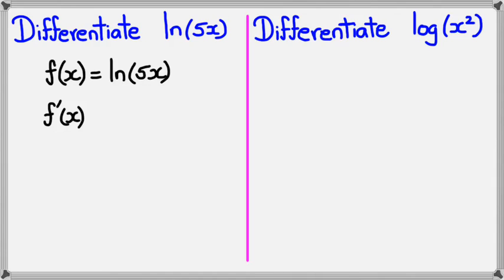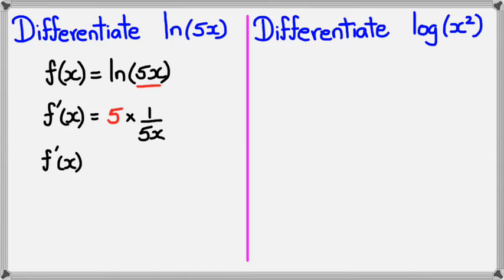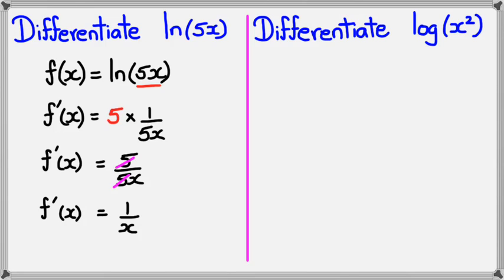To find f'(x), the first step is to differentiate whatever's inside the bracket. Here I've got 5x — differentiating gives 5 — and that's multiplied by 1 divided by whatever's in the bracket, which is 5x. Simplifying: 5 divided by 5x, the fives cancel, giving f'(x) = 1/x.